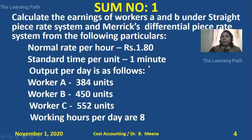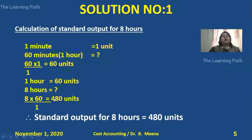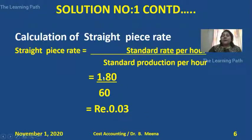The actual output given is: Worker A — 384 units, Worker B — 450 units, Worker C — 552 units. All three workers worked for eight hours. Since the standard time is one minute per unit, we convert to eight hours: one minute gives 60 units per hour, so for eight hours the standard output is 480 units. This is the standard output for eight hours.